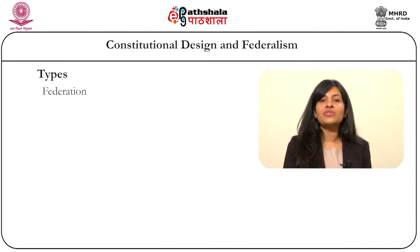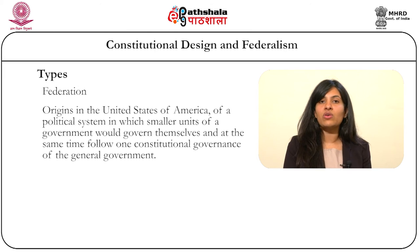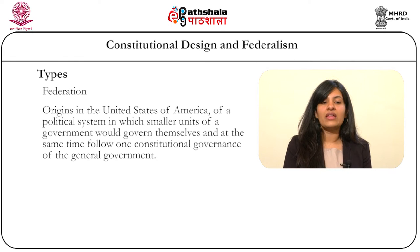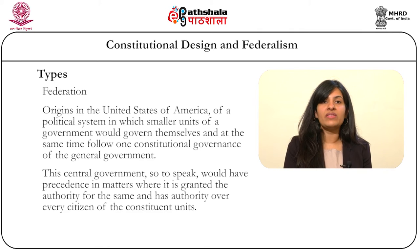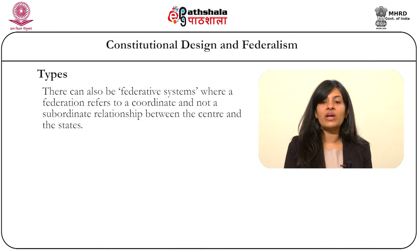Next is the federation. It is from here that the idea of federalism is derived and finds its origins in the United States following the American War of Independence, where the founding fathers envisioned a political system in which smaller units of a government would govern themselves and at the same time follow one constitutional governance of the general government. This central government would have precedence in matters where it was granted authority and would also have authority over every citizen of the constituent units. In a typical federation, the autonomy of regional governments is usually assured by a constitution which cannot be unilaterally altered by the central government. There are also contesting claims that describe federations as a species of federative systems, where a federation refers to a coordinate and not a subordinate relationship between the centre and the states.